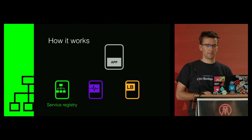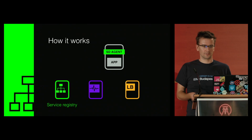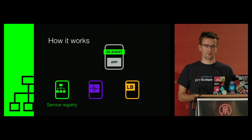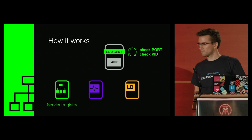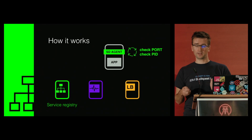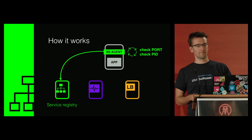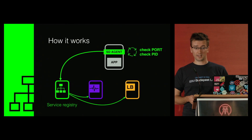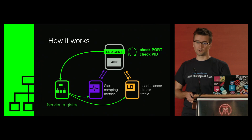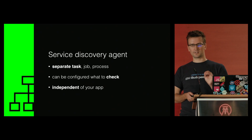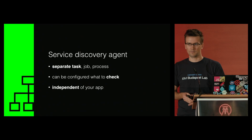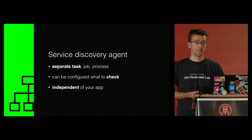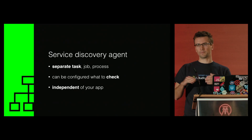On the host where your application is, there is a service discovery agent process called SD agent. It checks some properties of your application like process ID or the port it listens on — you can configure it really nicely. If your application becomes ready, the SD agent tells the service discovery registry that a new service is in the system. The service registry then notifies all other SD agents that a new node is in the service. Some SD agents can update a metric collector to scrape metrics from the new node, and some can update a load balancer to direct traffic to it. The key to this is the service discovery agent — a separate process on the host — which should not be part of your application, but part of your stack or configuration.